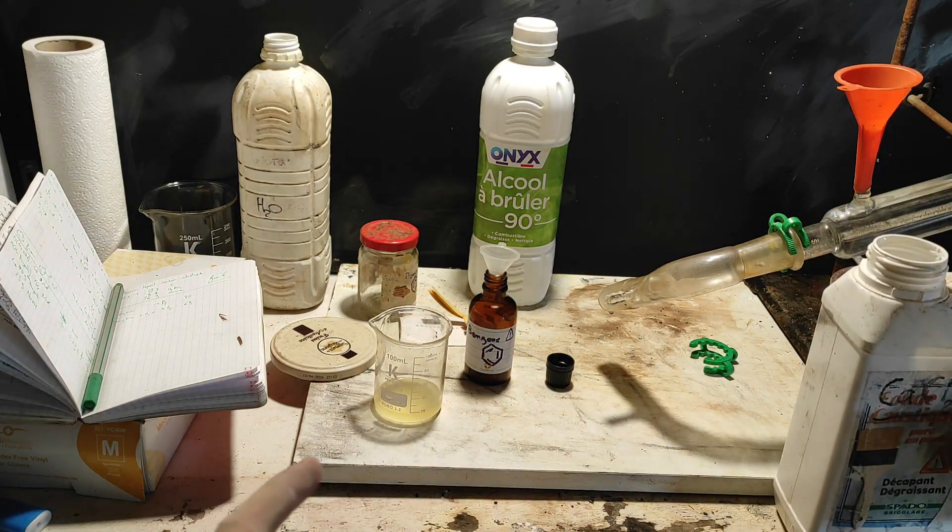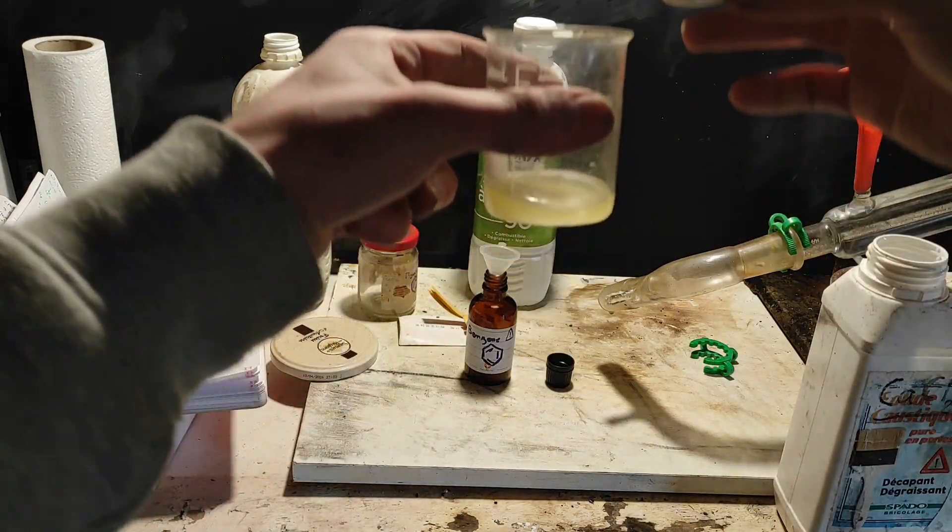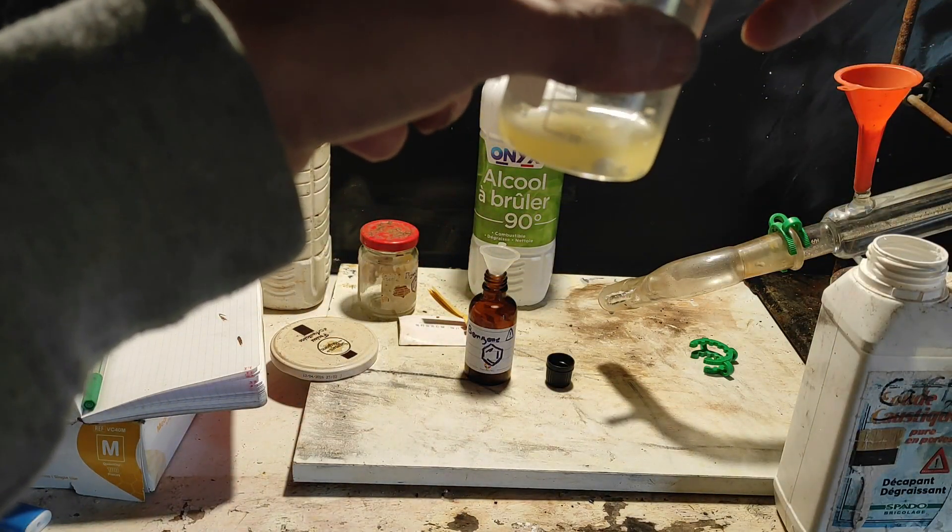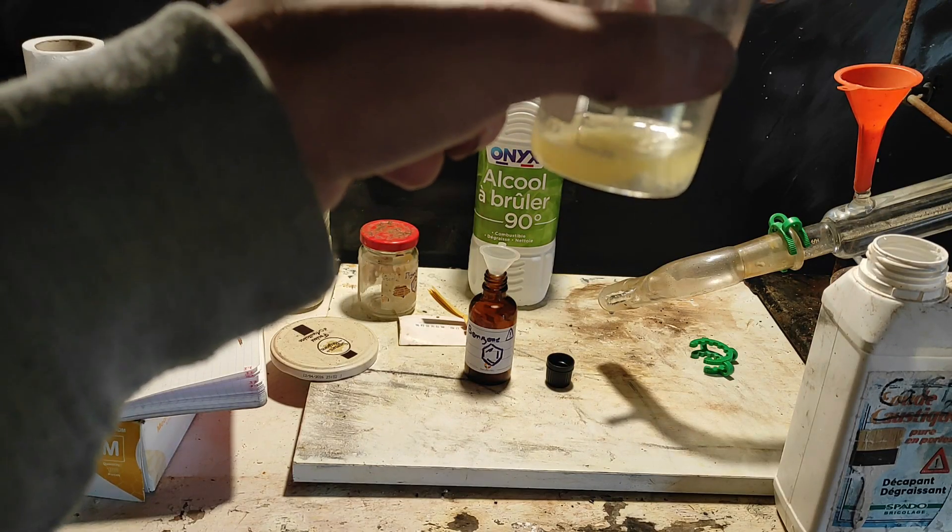I then put some calcium chloride into the cloudy benzene, and stir it to absorb the water. Then, I have this cute brown bottle that I have labeled, and put all of the dry benzene inside it.